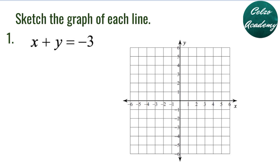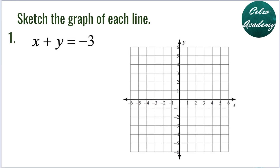Question number 1: X plus Y is equal to negative 3. The first thing we need to do is rewrite the equation in slope-intercept form. Isolating the variable Y on the left side, we subtract X from both sides. X minus X is 0, so the left side will be Y, and the right side is negative X minus 3, or Y is equal to negative 1X minus 3.